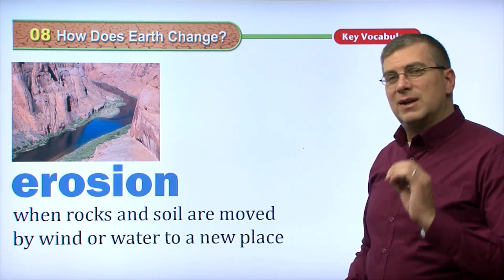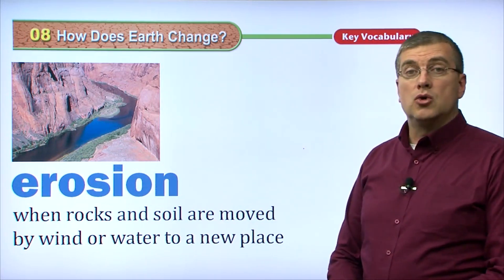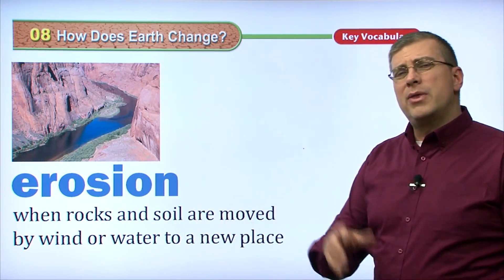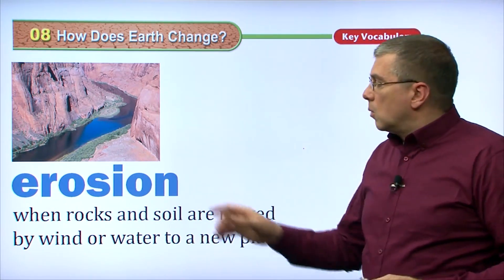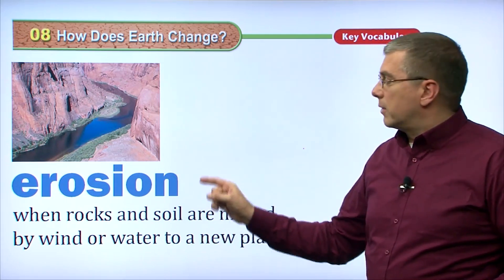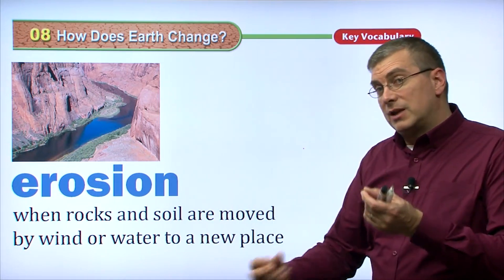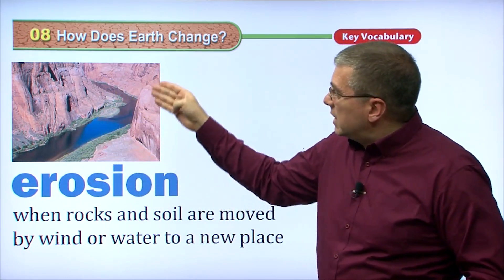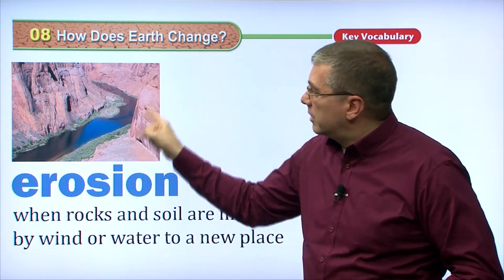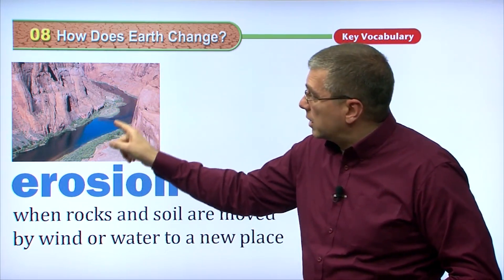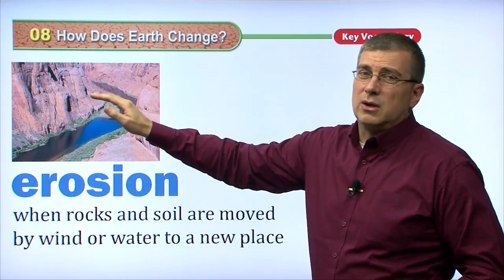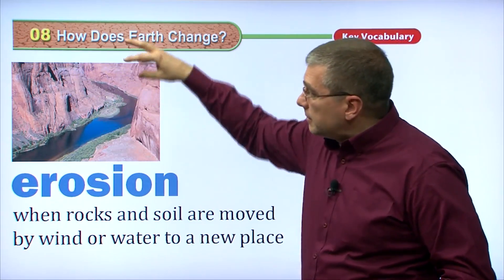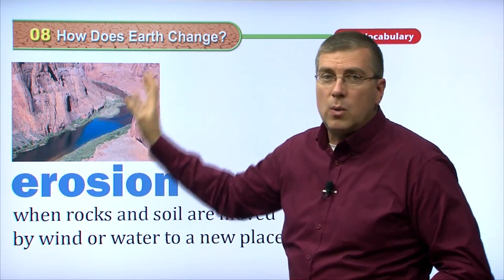Another specific type of weathering — we call that erosion. Erosion is when rocks and soil are moved by wind or water to a new place. Where weathering makes cracks and destroys rocks a little bit, a specific part of weathering is erosion — that's when rocks will actually move from one place to another. If you take a look at this picture, you can see a river at the bottom of a valley or canyon. Probably a long time ago, maybe millions of years ago, this land was flat. The water came by and dug into the ground and carried that ground away downstream.